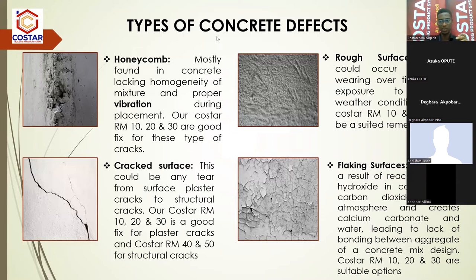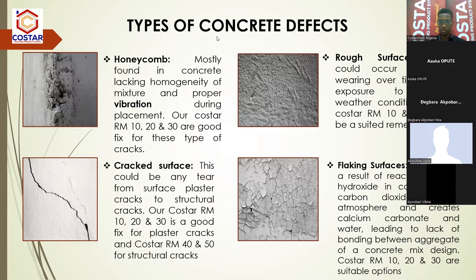We also have another defect: flaking of the surface. This occurs as a result of reacting calcium hydroxide in concrete with carbon dioxide in the atmosphere, creating calcium carbonate and water, leading to lack of bonding between aggregates of the concrete mix. Flaking is a concrete defect that requires you to remove all the loose concrete surface, all the loose and flaking surfaces, before you prime and apply a repair mortar.